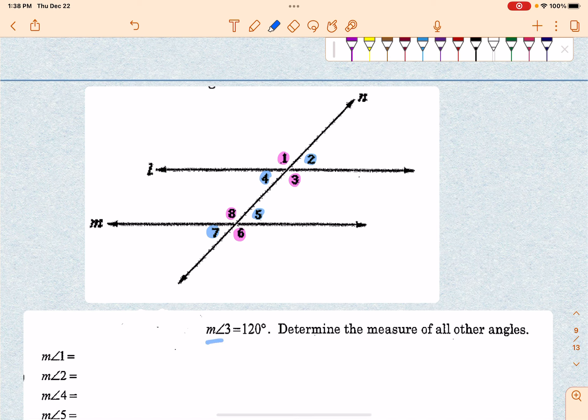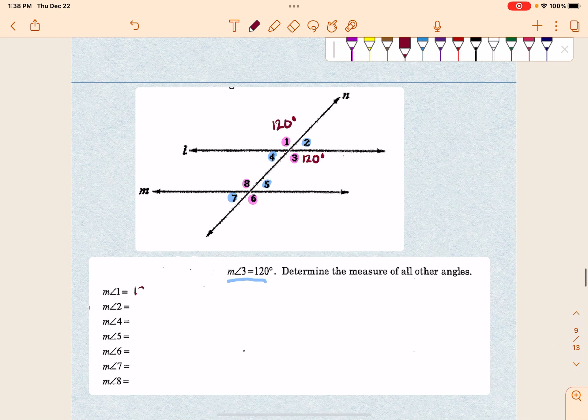Now they tell us down here that the measure of angle 3 is 120 degrees. So you know this is 120 degrees. So that means any other one that is that same color shares that same measurement. So 1 is going to be 120 degrees. 8 is 120 degrees.